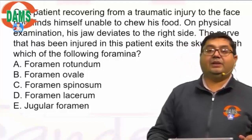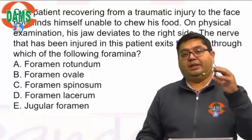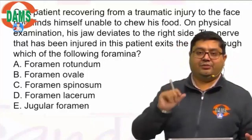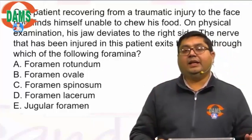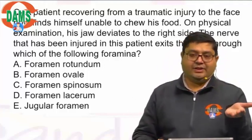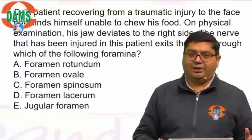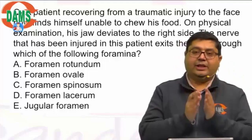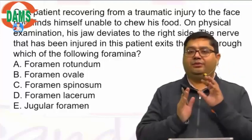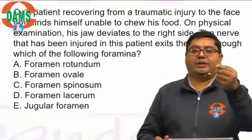Basically, we can say that this patient is having an inability to chew — that is the mastication process. Now, mastication is done by the muscles of mastication, and the muscles of mastication are supplied by the mandibular nerve. So basically, in all cases of nerve injuries, we have to see what the inability is — what is the motor loss and what is the sensory loss.